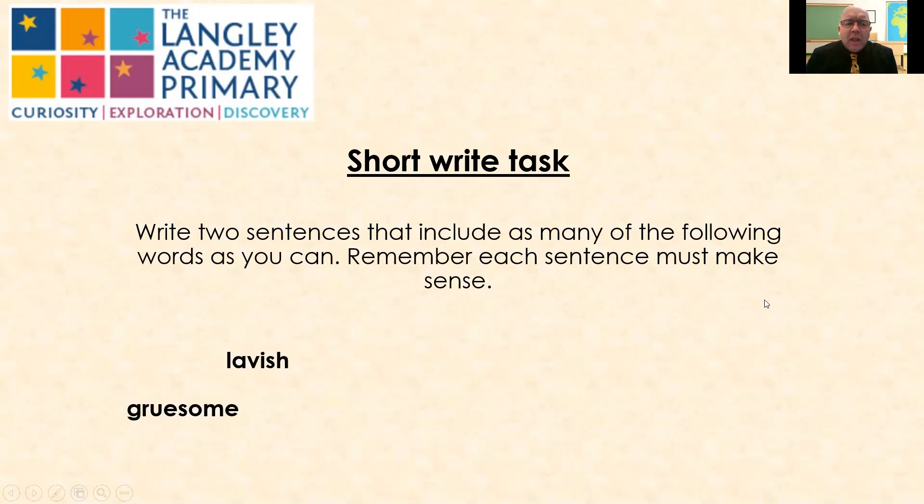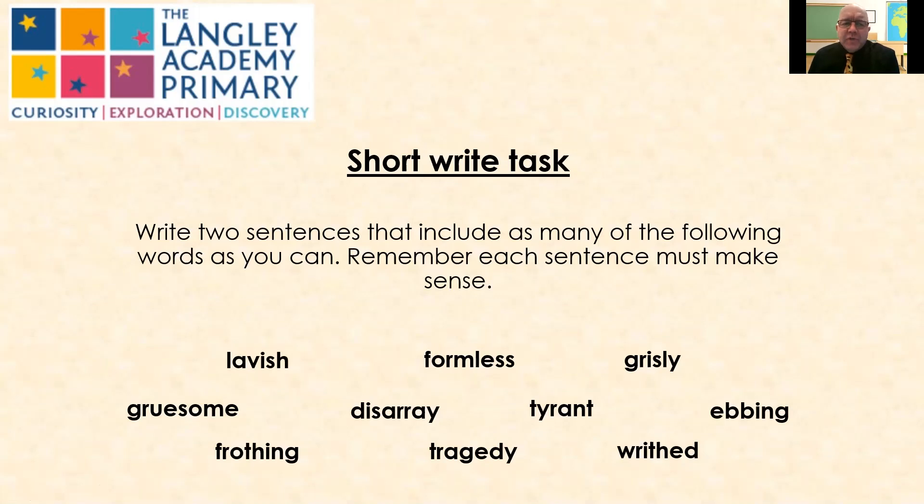So here are your words. We've got gruesome, lavish, frothing, tyrant, grisly, writhe, ebbing, formless, disarray, tragedy. Now, all of these words featured in our class text. We've talked about the definitions, the meanings of each one. I would be amazed if you could fit all ten words in there. I would much rather you did seven or eight and it was a really good sentence that made sense and was clear.